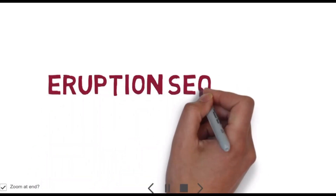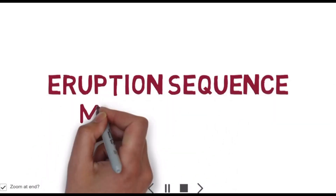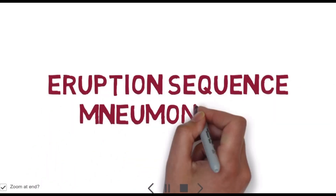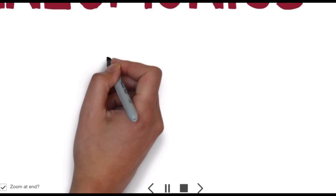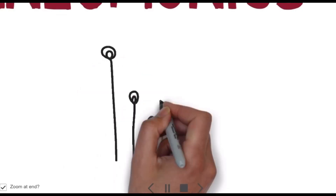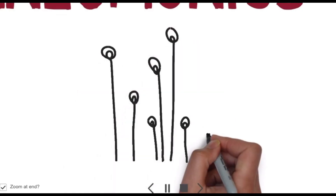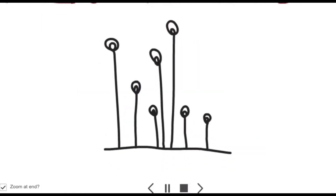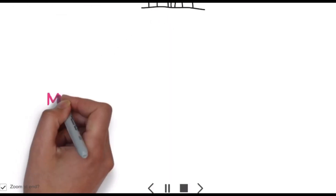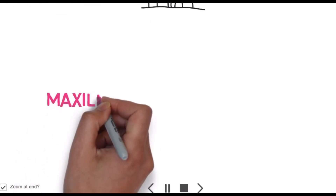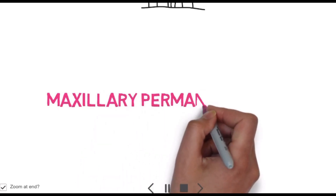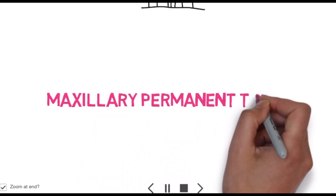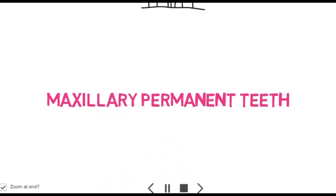Hello friends, welcome back to JK Dentis. Today we will see how to remember tooth eruption sequence with time interval by using mnemonic technique. First is maxillary permanent teeth, so I will tell you a story of a cat who loves to play with a pretty cow of Mr. Mehta.